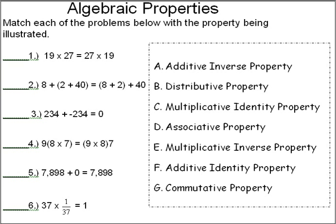Number 1. What we're doing in number 1 is we're changing the order of the terms. We changed 19 and 27. So we changed the order. That is G, the commutative property.